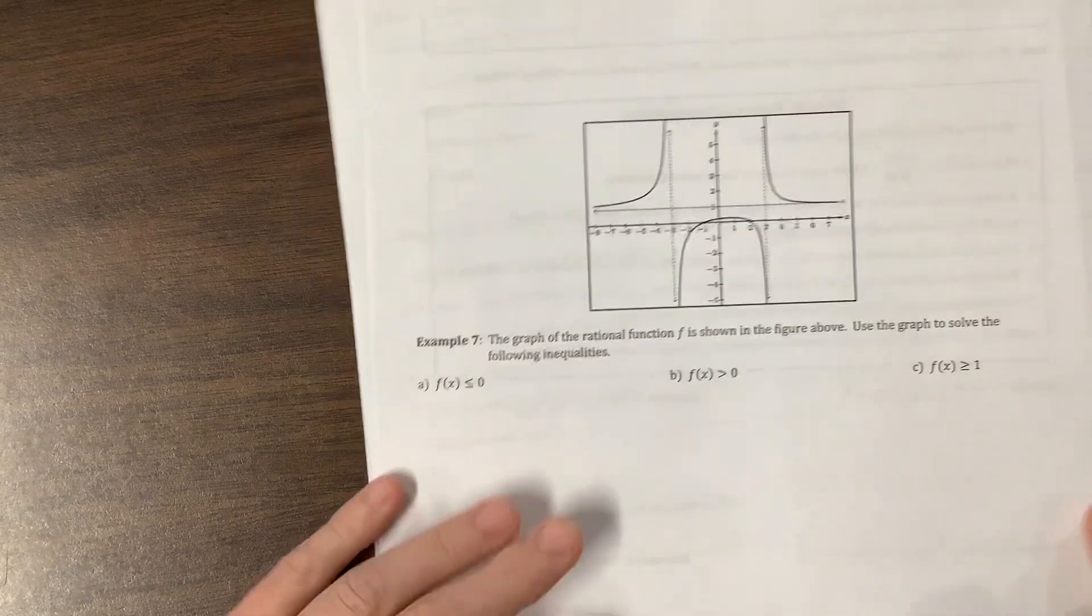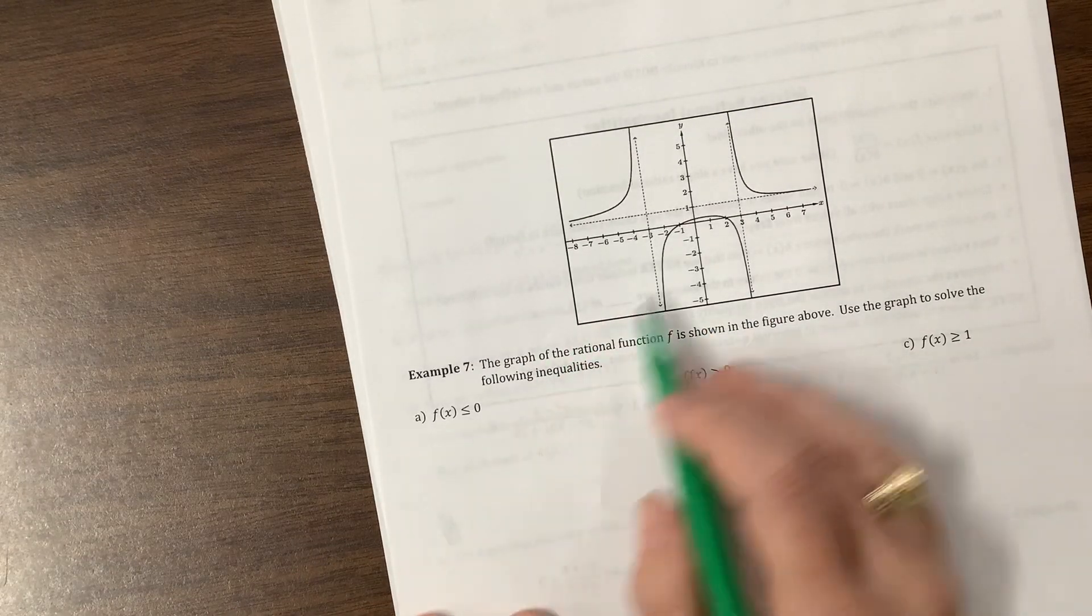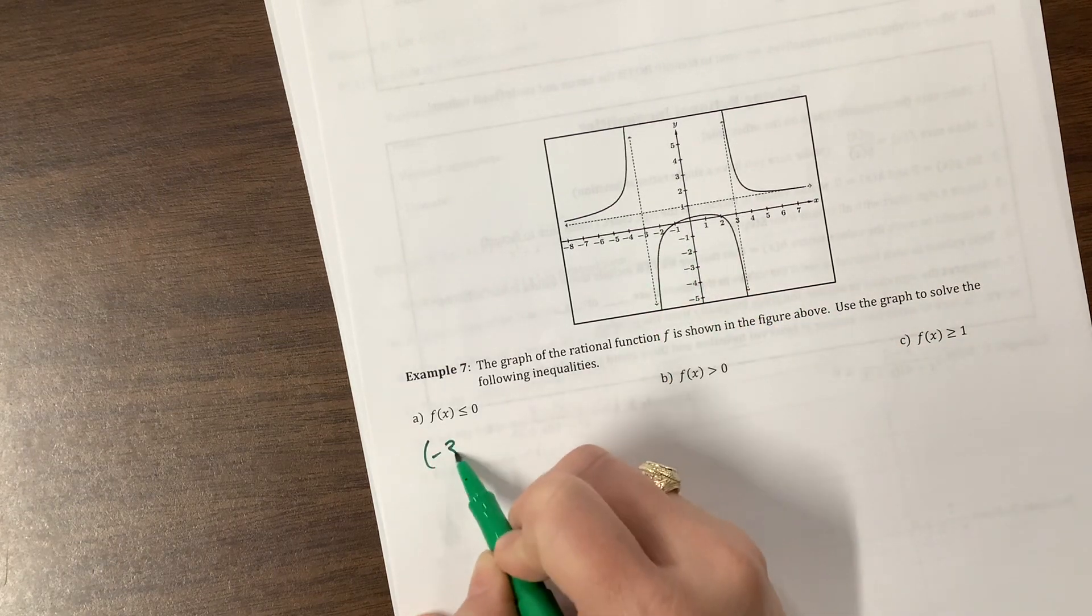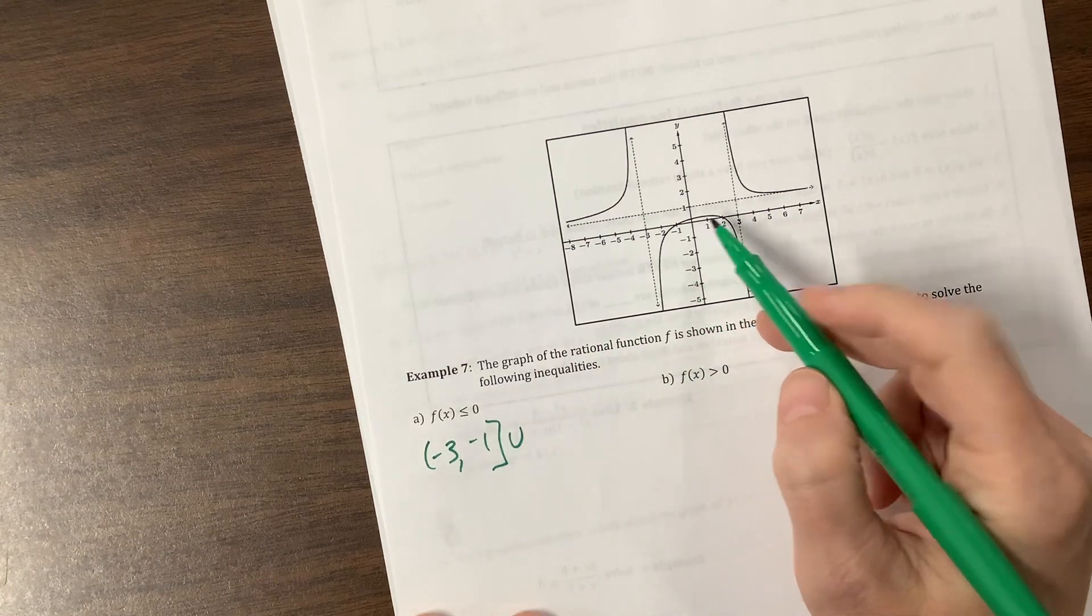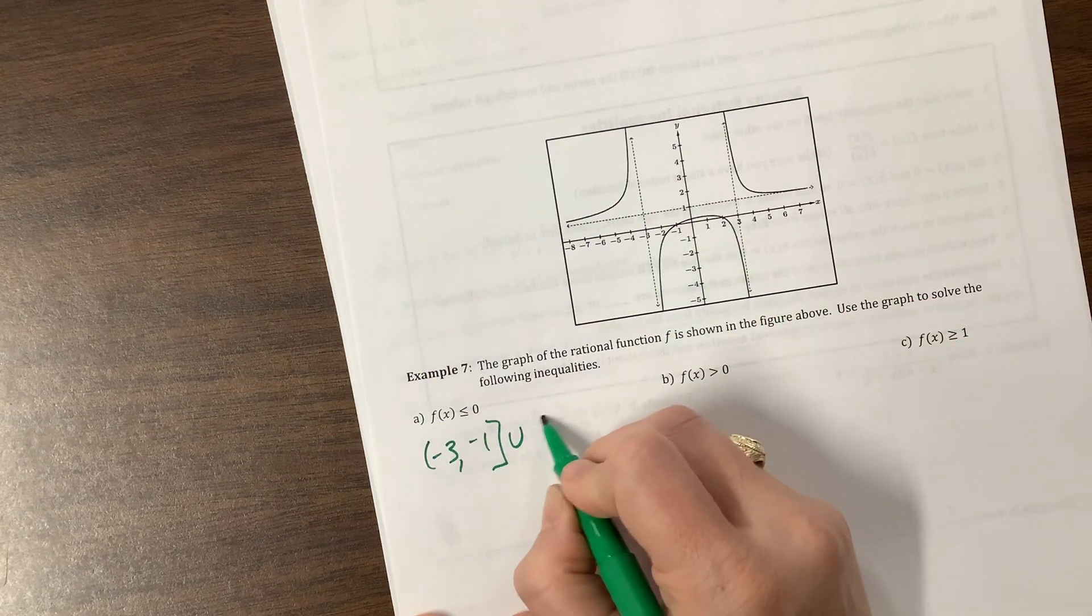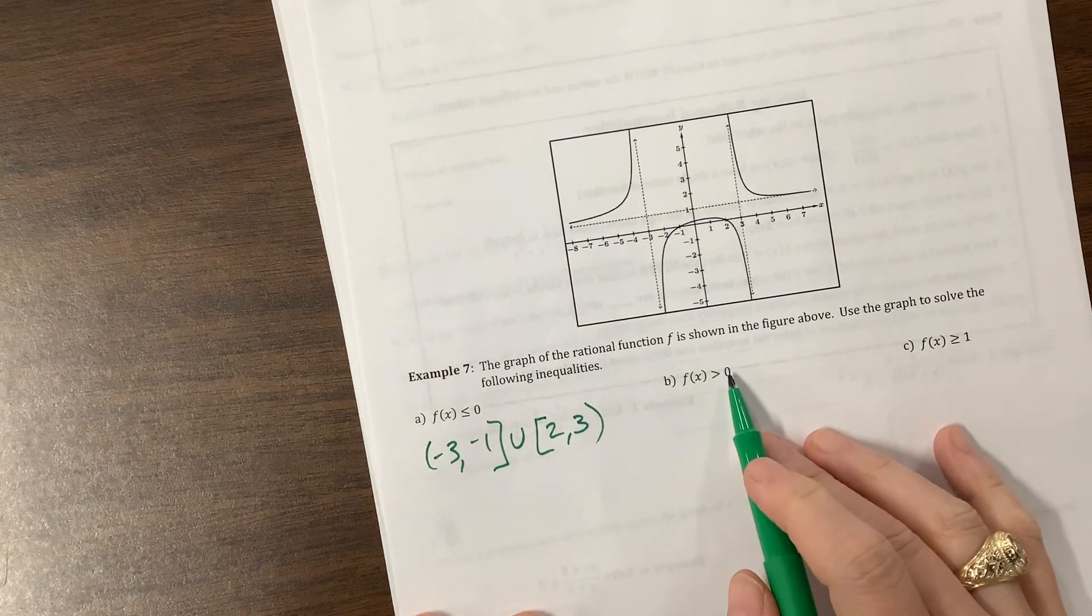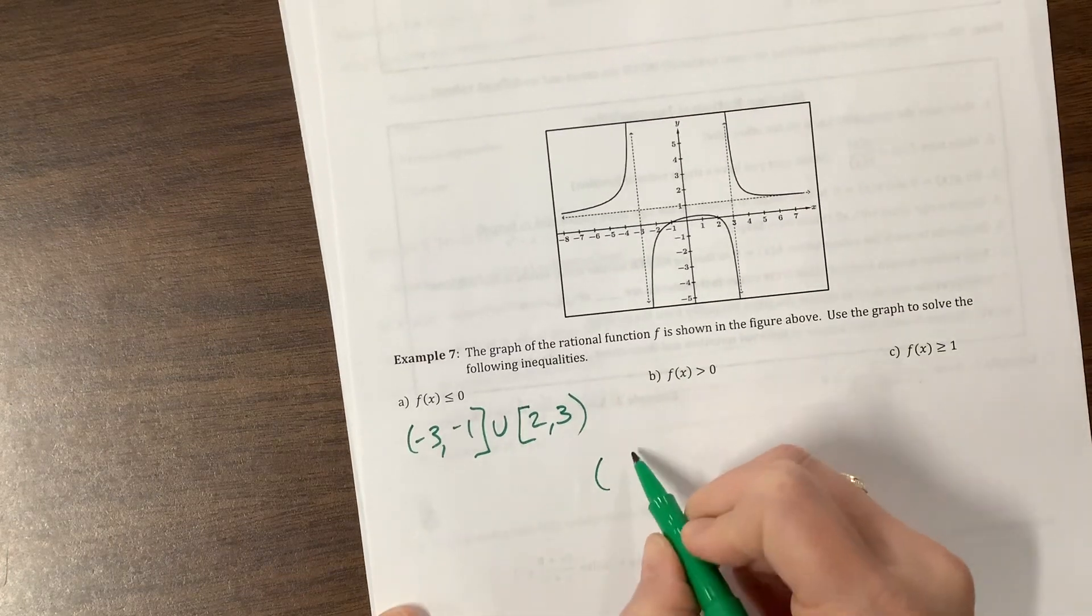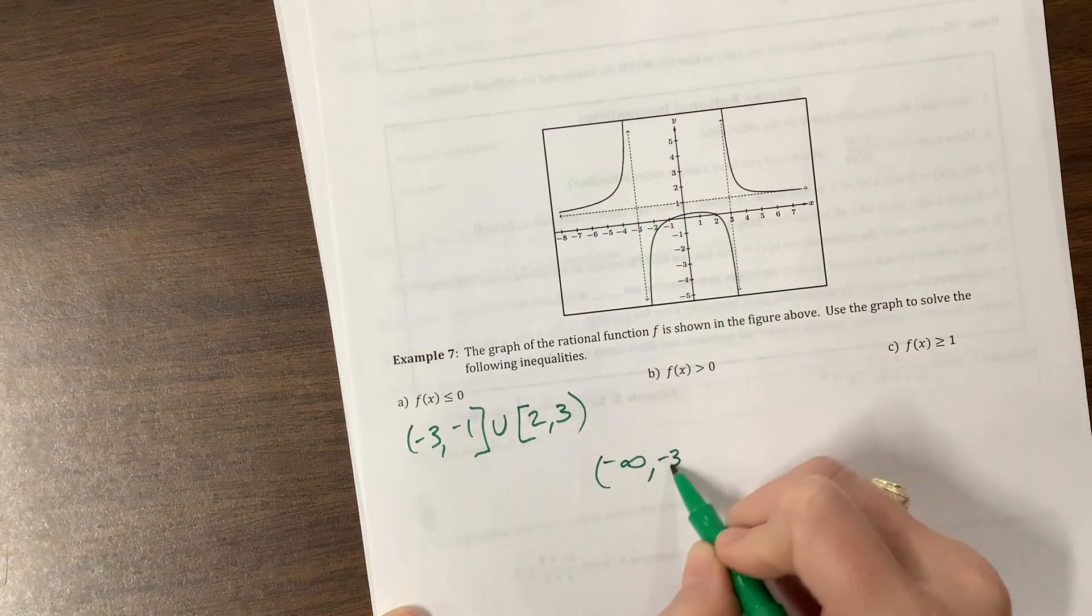I think it's a little bit different in that they've given us the picture. Okay, so where are we less than or equal to 0? Well, we're less than or equal to 0 from negative 3 to negative 1. We can equal negative 1, and then we pick it up again. We're less than 0 or equal to 0 from 2 to 3. But we can't equal 3 because it's an asymptote.